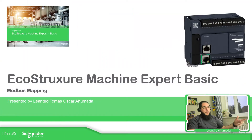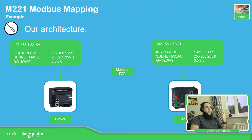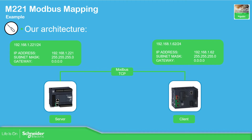In order to implement this Modbus mapping, I'm going to use the Modicon M221 and connect it to the Modicon M262, which is another PLC that uses a different software. The idea is to have both devices on the same network, with the M221 as a server and the M262 as a client.